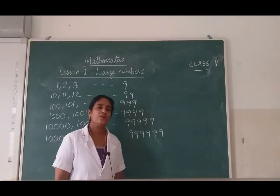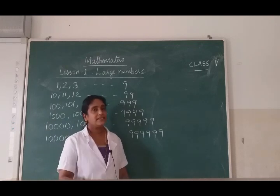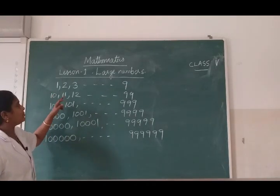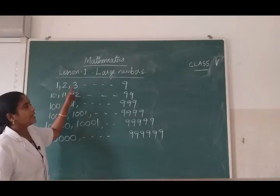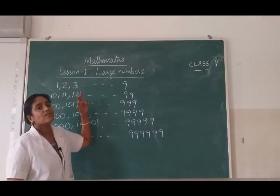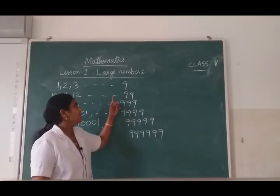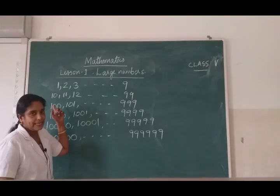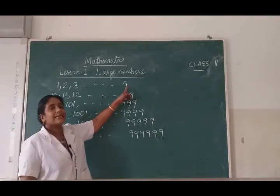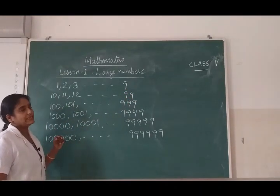In your previous classes you already studied about numbers. Before starting the lesson let us revise that. From smaller classes you have studied the counting numbers 1, 2, 3 etc. From 1 to 9 those are one digit numbers. After 9, the number we get is 10. 10 is a 2 digit number.